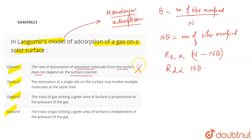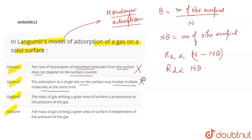The second statement says adsorption of a single site on the surface may involve multiple molecules at the same time. This is also incorrect, because multi-layer adsorption is not possible under Langmuir's assumptions — only monolayer adsorption is considered.